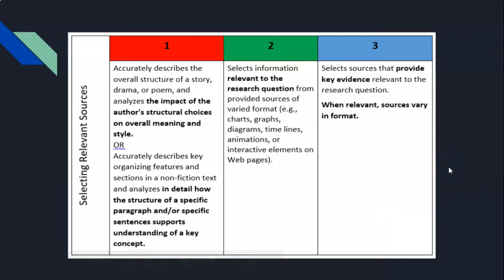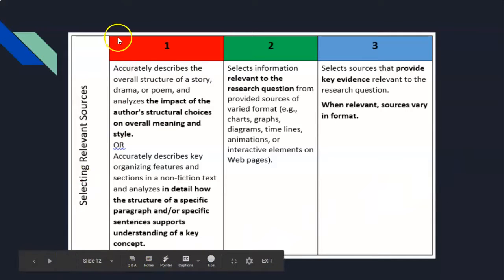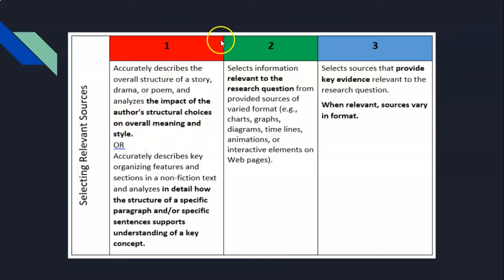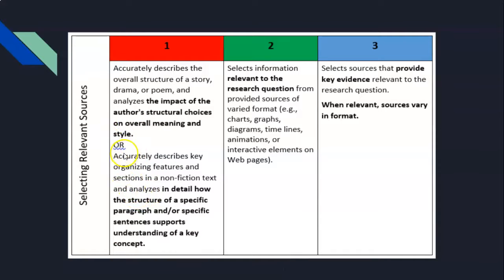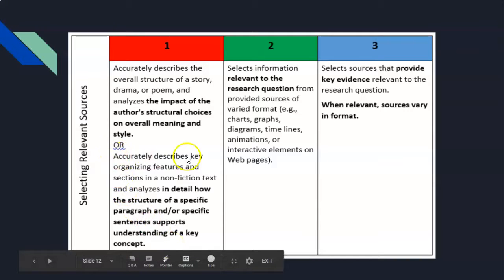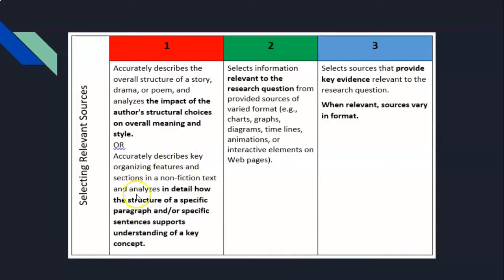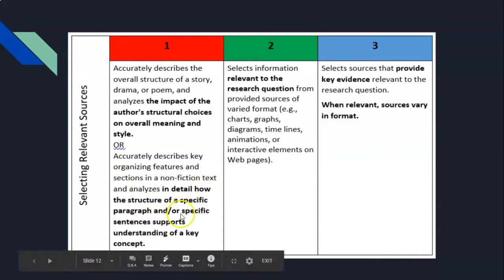The last one is selecting relevant sources. For selecting relevant sources, the first part doesn't really apply to science—you might find this cog scale in reading as well, or in writing or history. The bottom part is relevant to what we do in science: accurately describe key organizing features and sections in a non-fiction text, and analyze in detail how a specific paragraph or specific sentence supports the understanding of a key concept. That's for one point.